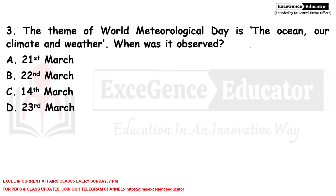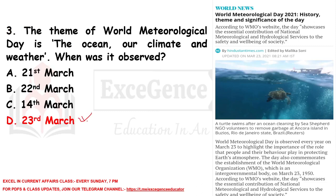The theme of World Meteorological Day is 'The Ocean, Our Climate and Weather.' It is observed on 23rd March. It showcases the essential contribution of national meteorological and hydrological services to the safety and well-being of society. The day also commemorates the establishment of the World Meteorological Organization, which was established on 23rd March 1950.